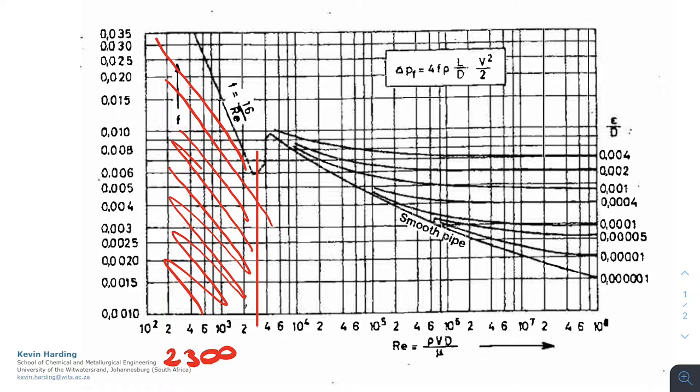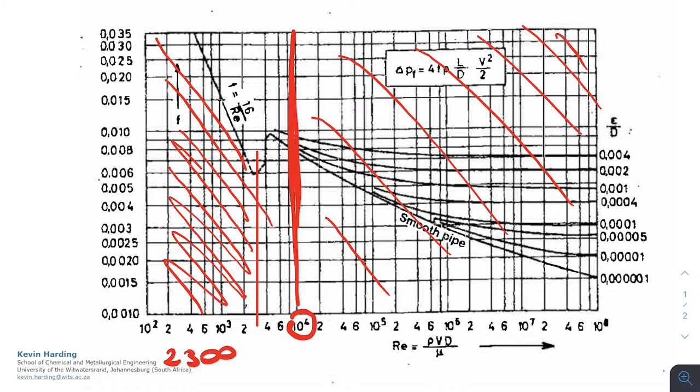For anything above 10 to the 4, so this will be to the right hand side of this line, we are going to have the turbulent zone. In the middle here you'll see there's a bit of a funny area. This yellow demarcation is where we have this transition zone. If you need to use this, please just follow the squiggly lines as best you can.